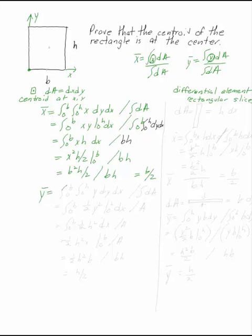My y bar here, if I'm going to do a two step integral, looks the same. I get the integral from 0 to b of 1 half y squared from 0 to h divided by the area.